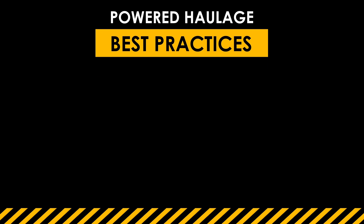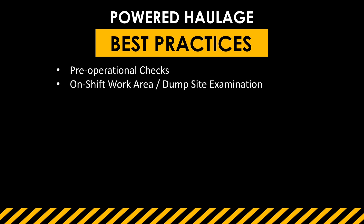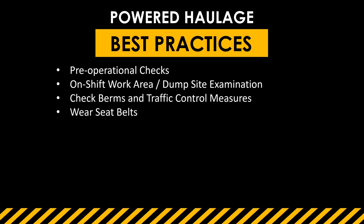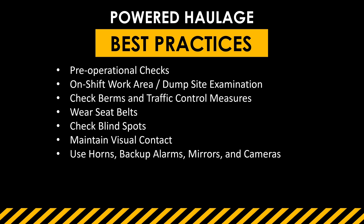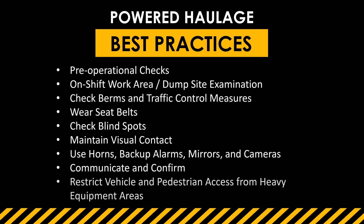Best practices for avoiding powered haulage fatalities include pre-operational checks to ensure equipment is functioning properly, doing on-shift work area and dump site examinations, checking berms and traffic control measures, making sure signs are in place, always wearing seat belts, checking blind spots, maintaining visual contact, using horns, backup alarms, mirrors, and in some cases backup or side cameras. Follow all communication and confirmation protocols — visual, hand signals, radios — and restrict vehicle and pedestrian access from heavy equipment areas.